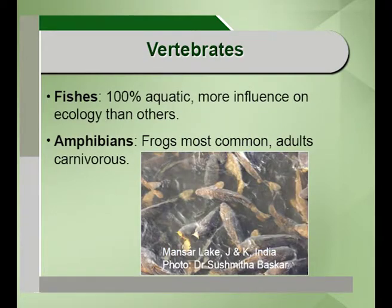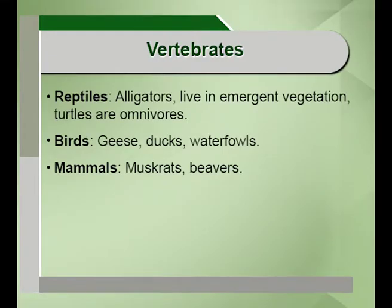Vertebrates are very important and diverse organisms. Fishes are 100 percent aquatic and influence the ecology more than any other organism in these systems. Amphibians include mainly tadpoles and frogs — the adult frogs are carnivorous in nature. Vertebrates also include reptiles, birds and mammals such as alligators, geese, waterfowl, muskrats and beavers.